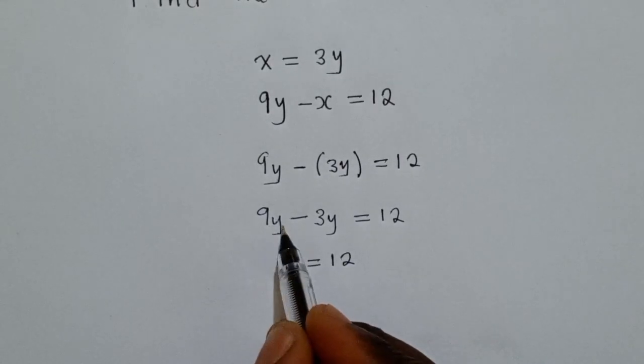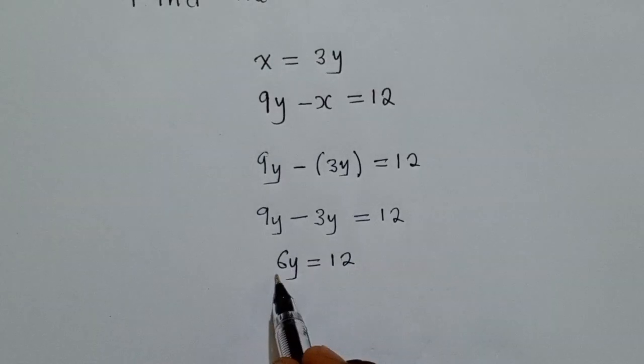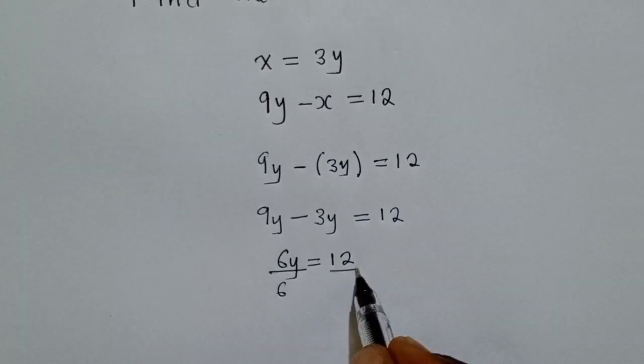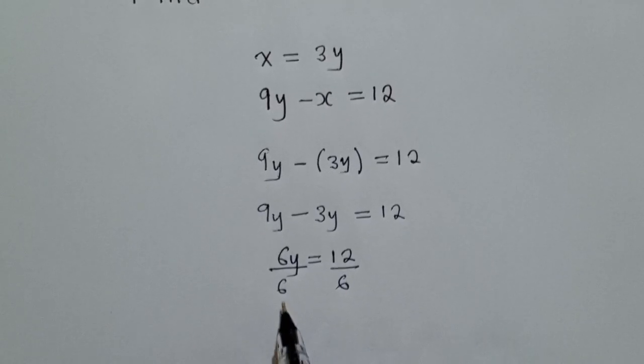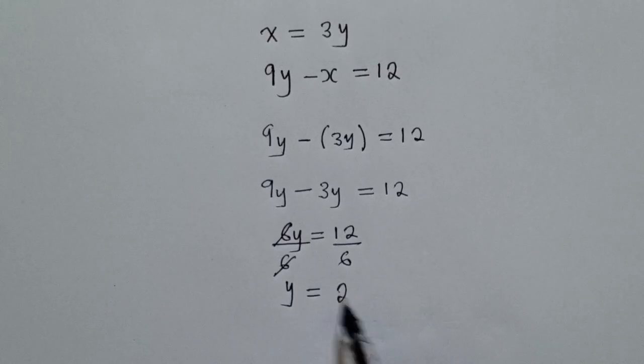When we say 9Y minus 3Y, it's 6Y. So at this point, we can divide by 6, divide by 6. So the 6 right here and this one will go, we shall remain with Y is equal to 2.